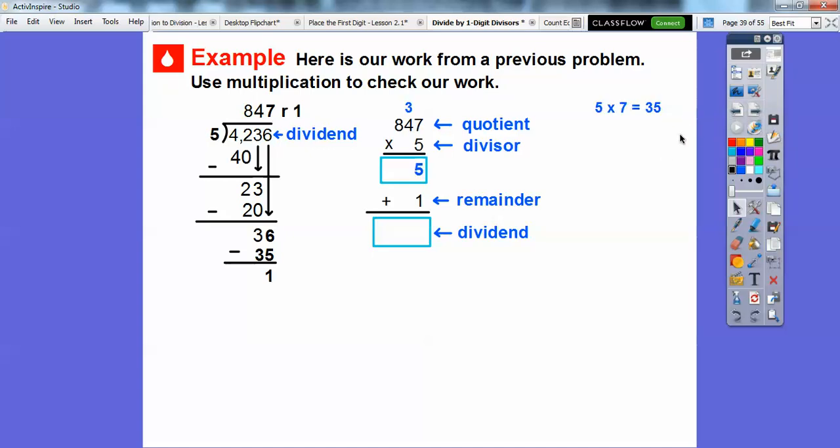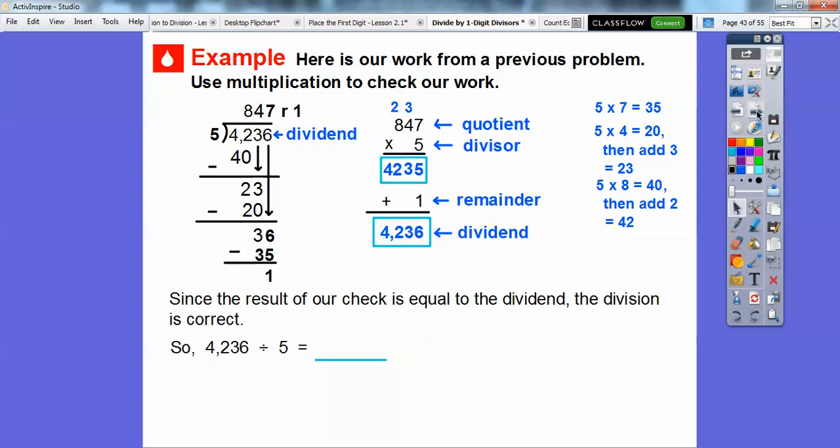Let's go ahead and go through. 5 times 7 is 35, so we'll put the 5 here and carry the 3. And then 5 times 4 is 20, and then we add this regrouped 3, so we get 23. Here's the 3, and then we carry the 2. Then 5 times 8 is 40, and then add that 2 on top is 42. So 4,235, then we're going to add this remainder, and we get 4,236, which is what our dividend was up there. So since the result of our check is equal to the dividend, the division problem is correct. So 4,236 divided by 5 gives us 847 with the remainder of 1.